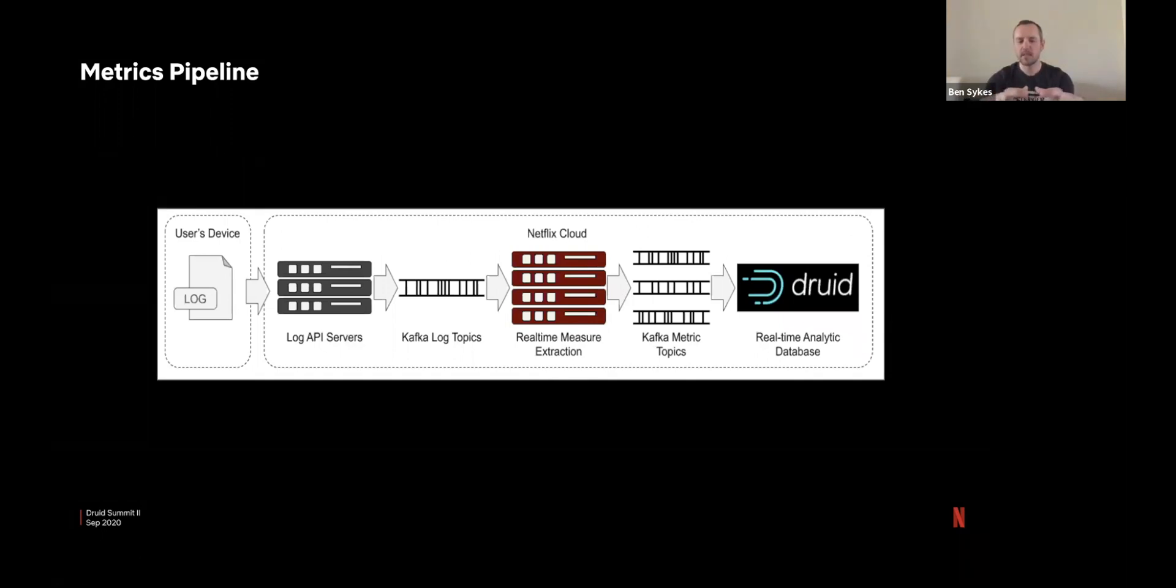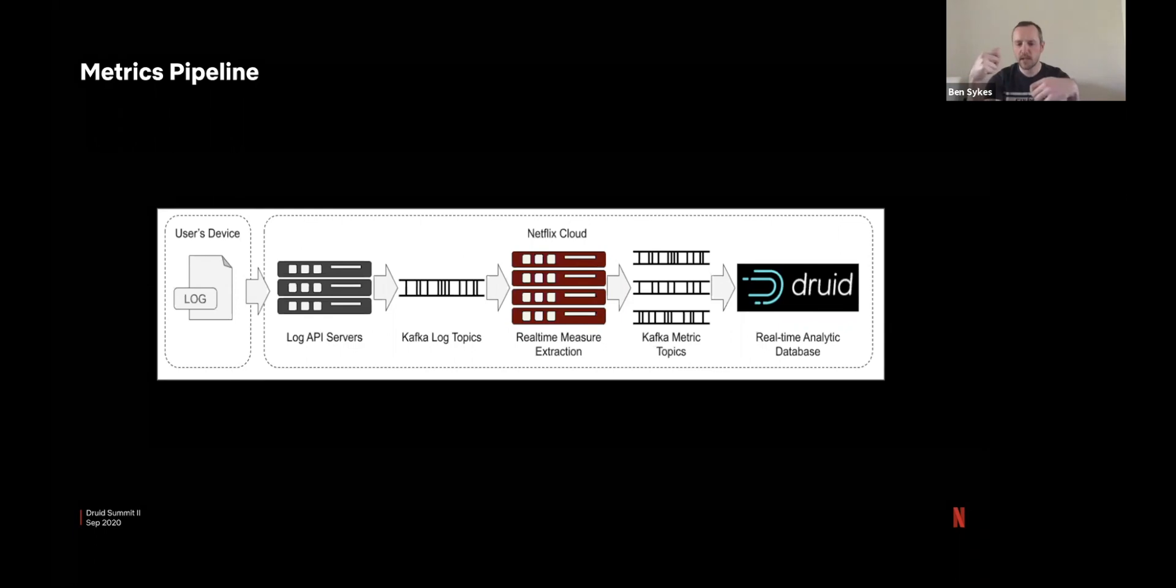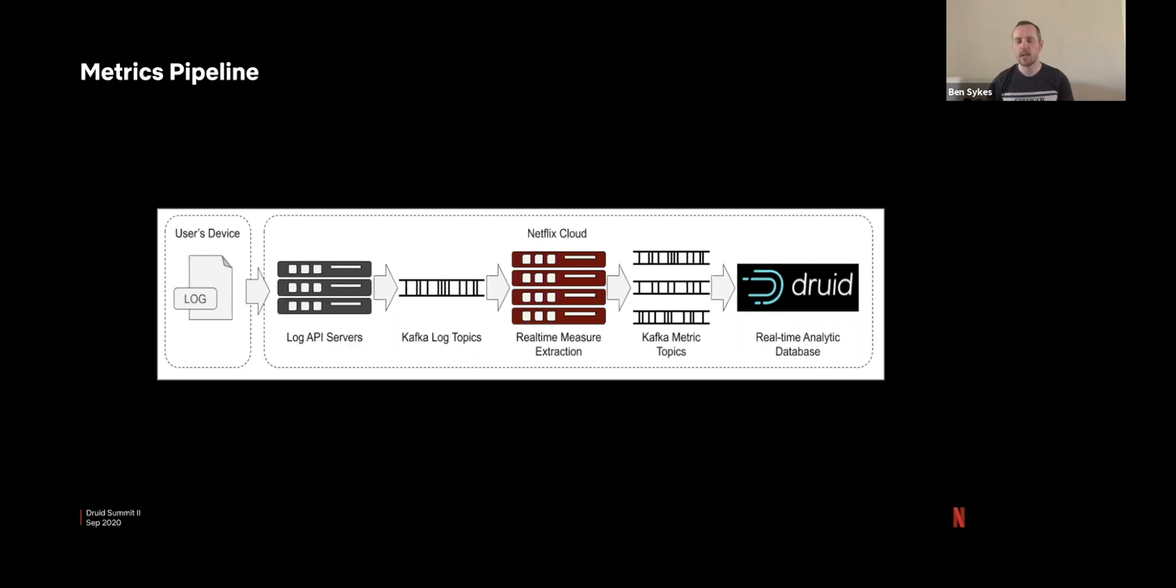After we've manipulated these logs and extracted the values we want to extract, we put them onto new Kafka topics. Here we maintain right now one Kafka topic per data source for easier alignment. And then we use Druid real-time ingestion to read those Kafka topics into data sources.